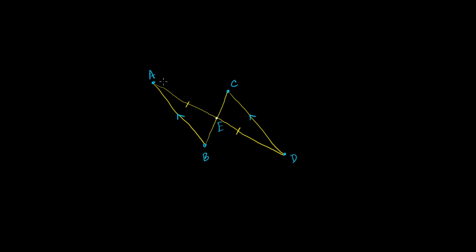And what this diagram tells us is that the distance between A and E, this little hash mark, says that this line segment is the same distance as the distance between E and D. Or another way to think about it is that point E is at the midpoint, or is the midpoint of line segment AD.